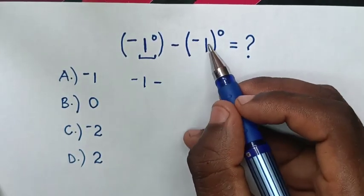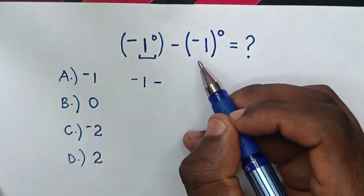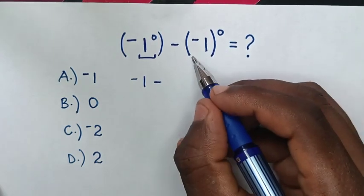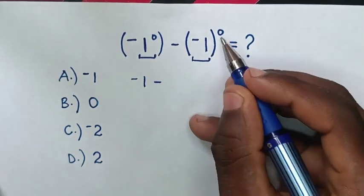in here, negative 1 is inside the bracket. As any number power 0 is 1, so here, negative 1 power 0 is 1.